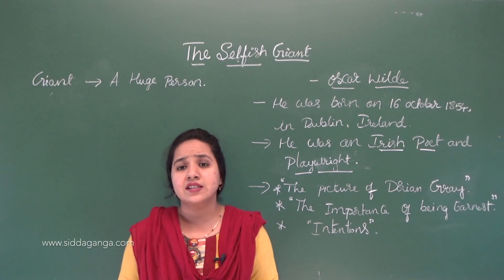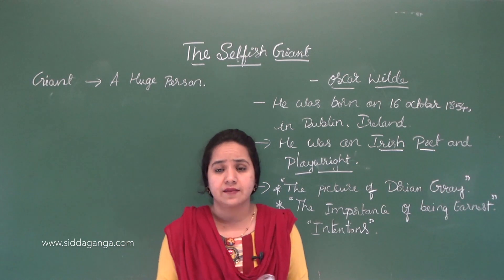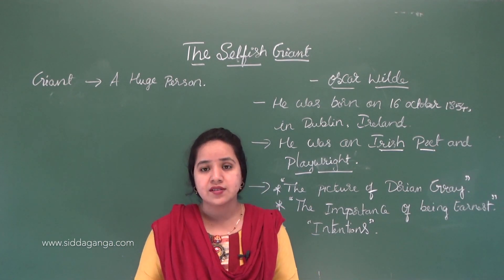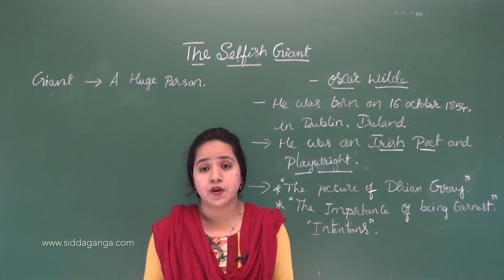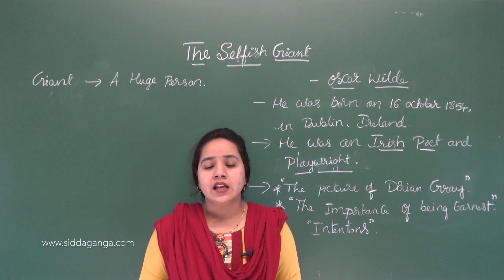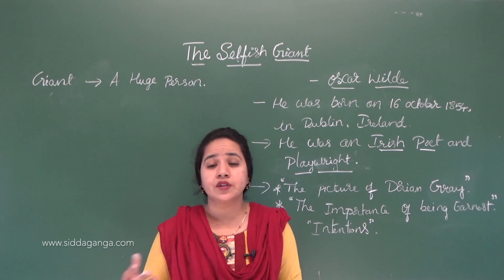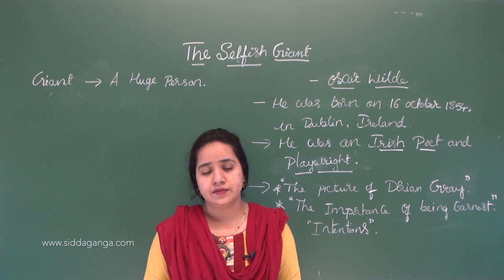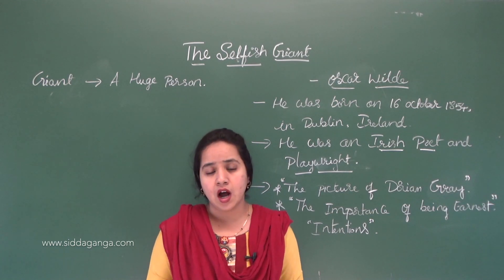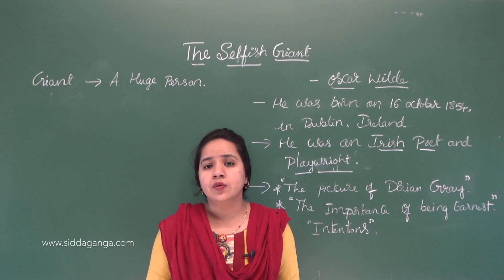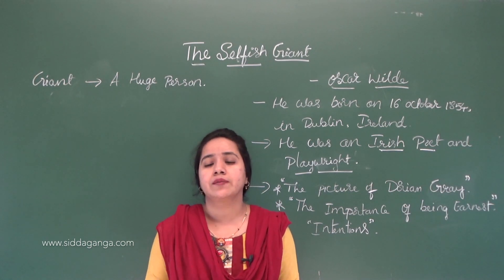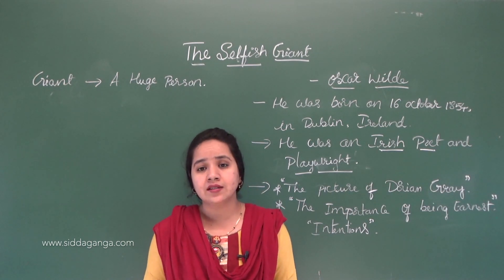The lesson is about a person who is a huge Giant figure. He had a beautiful garden. But he had gone to a friend's house, so all the children were gathering in his garden and they were playing there.